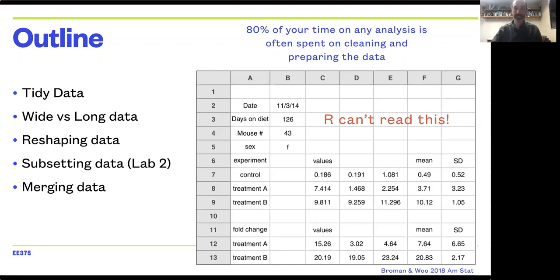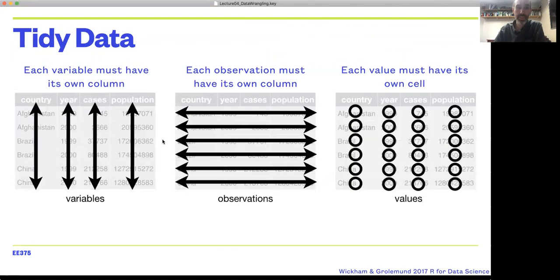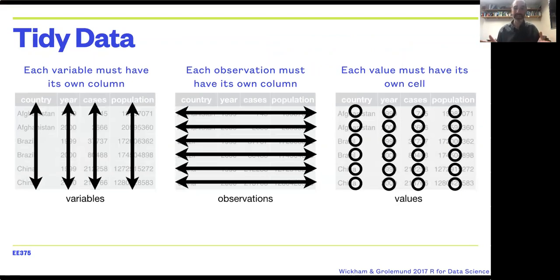So what is tidy data? Tidy data has three key characteristics. The idea would be that each variable must be in its own column, and that we're using columns to indicate what the variables in our data set are. Each row corresponds to an observation, and there's only one single observation that shouldn't be spread over multiple rows.